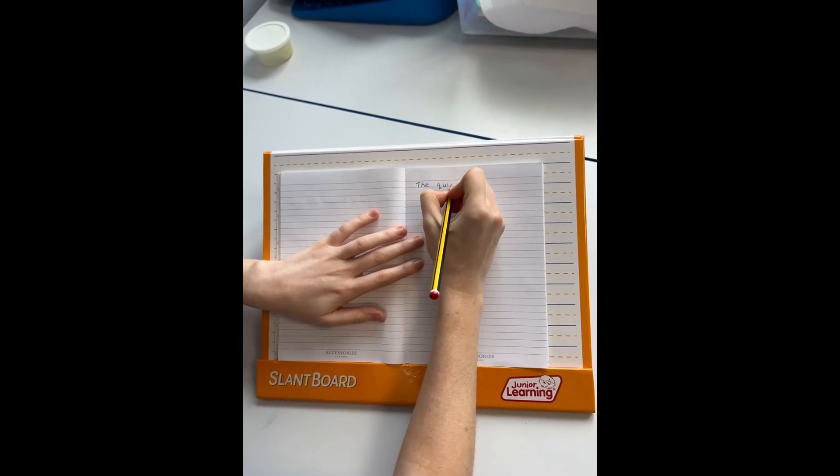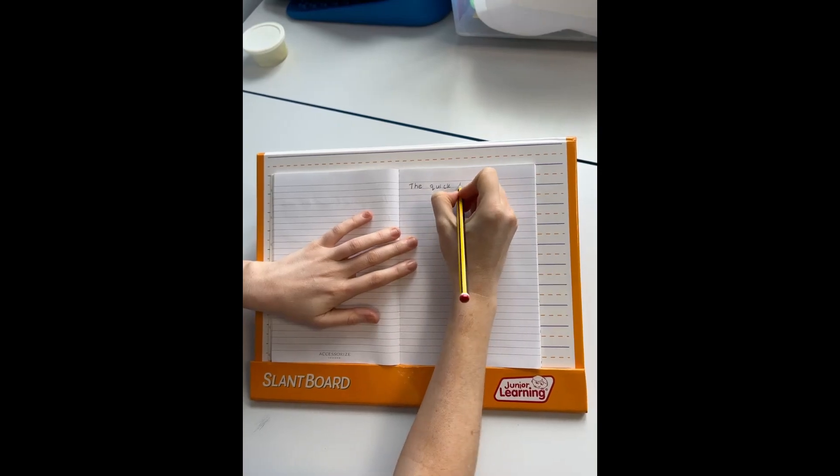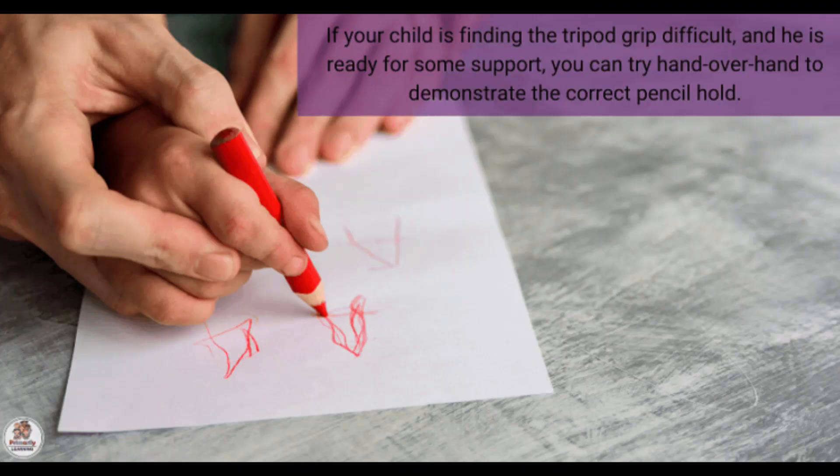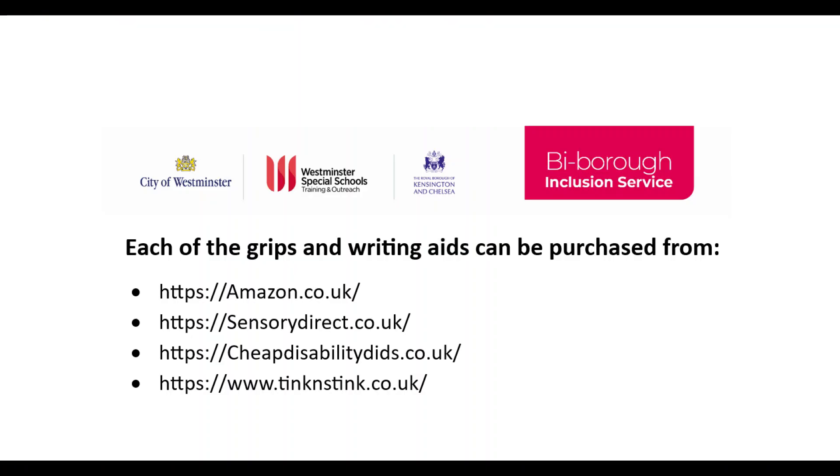Whichever grip you choose, it might take the child a little bit of time to get used to it. Check that their fingers are in the right place and prompt them if they move their hand back to their old grasp. When they are able to use the grip correctly, check it increases comfort and their ability to write.